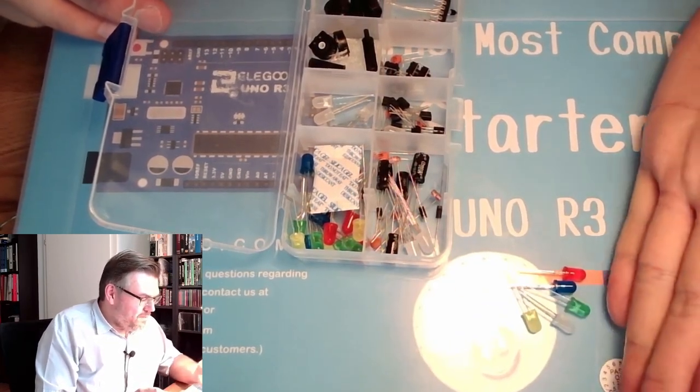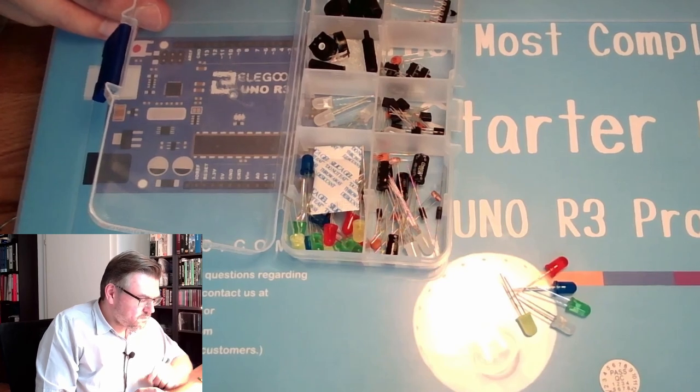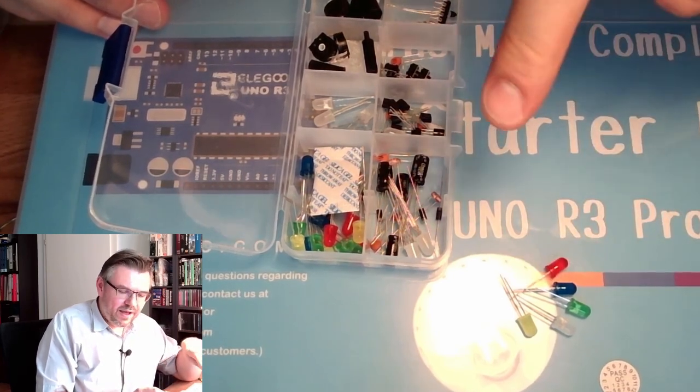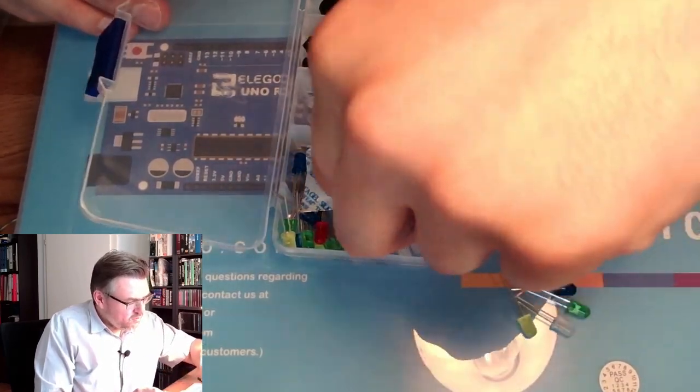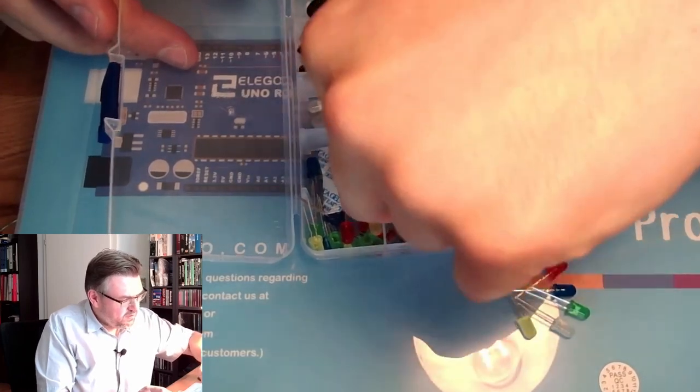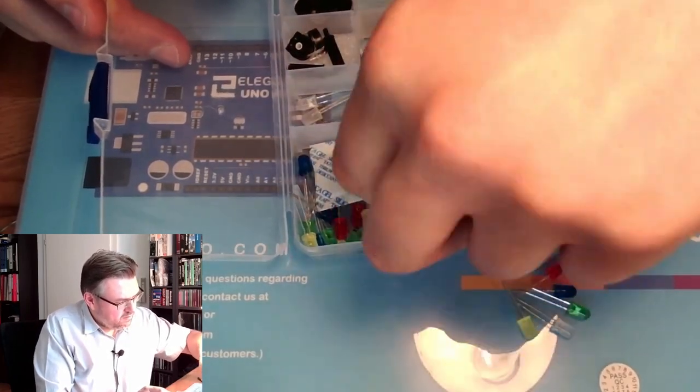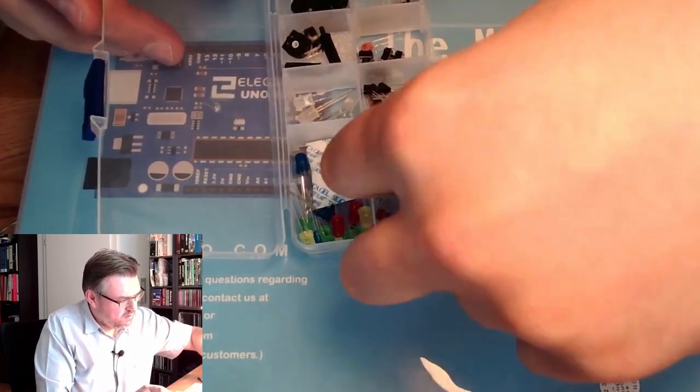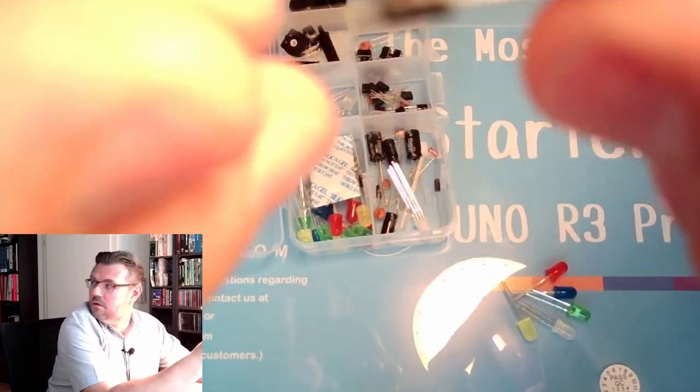So they come in multiple colors. You do not even have only light emitting diodes in there, you also have regular diodes. This for instance is a regular diode. This here, this is a regular diode.